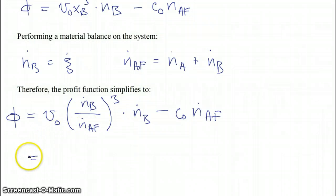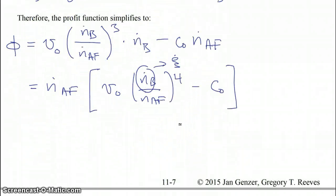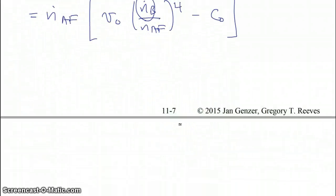This can be then changed into N dot A feed times the quantity V0 N dot B over N dot A feed now to the fourth power minus C0. But note that N dot B from our material balance is just C dot, right?